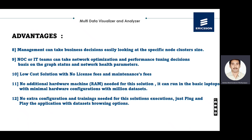The ninth advantage: NOC and IT teams can take network optimization and performance tuning decisions based on graph status and network health parameters. Network operations teams can easily optimize the network — identifying tower base stations, traffic levels, high or red alerts, and warning conditions — including tower ID, location ID, and ticket numbers — to identify problematic areas and tune the performance of specific network nodes.